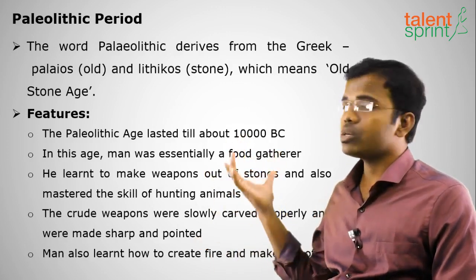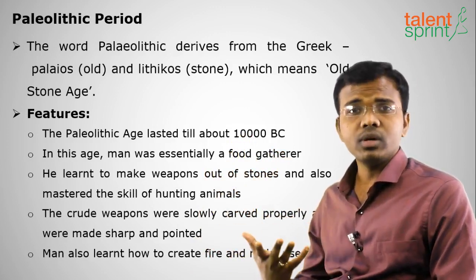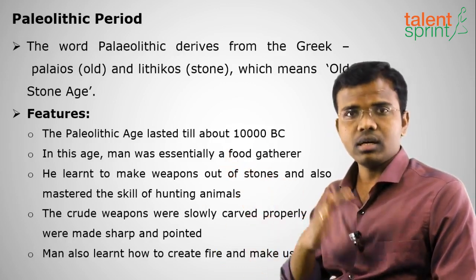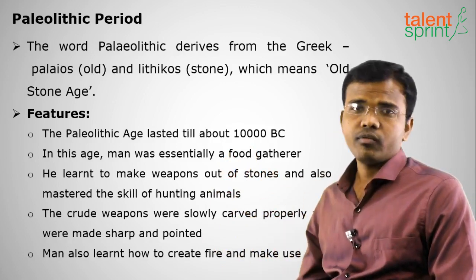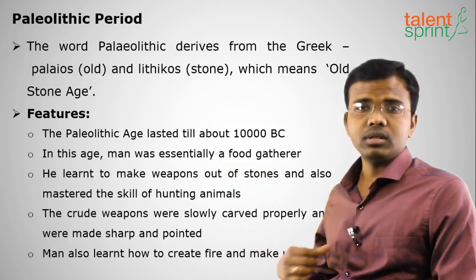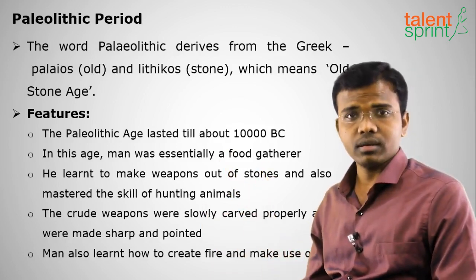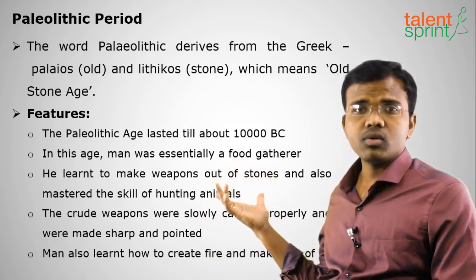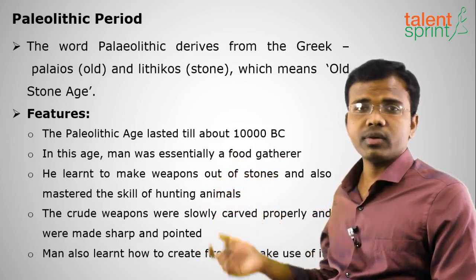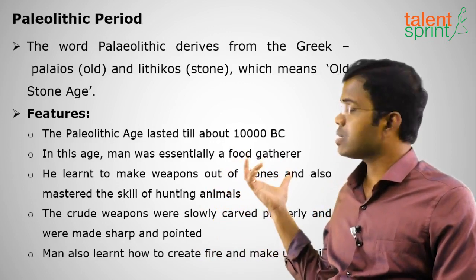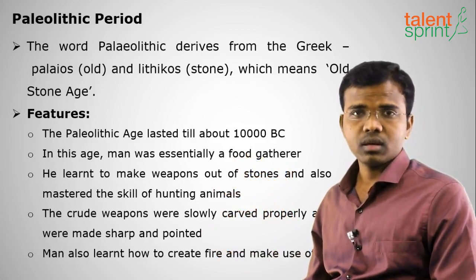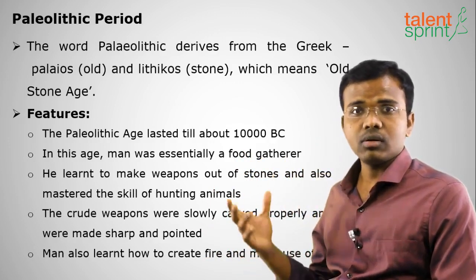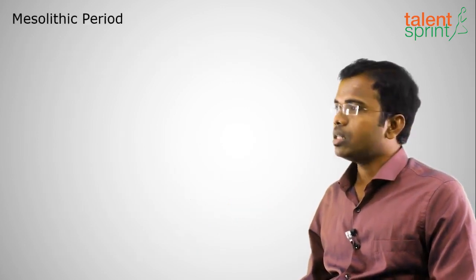During the Paleolithic period, human beings were primarily hunters of different animals for food — they were food gatherers. Later, they developed the use of fire by rubbing two stones together. So the Paleolithic human was a hunter for food-gathering purposes, and he also developed stone tools using his knowledge and brain to aid in hunting.